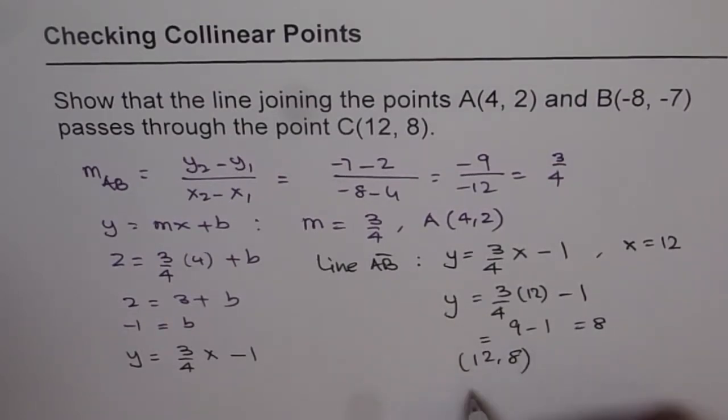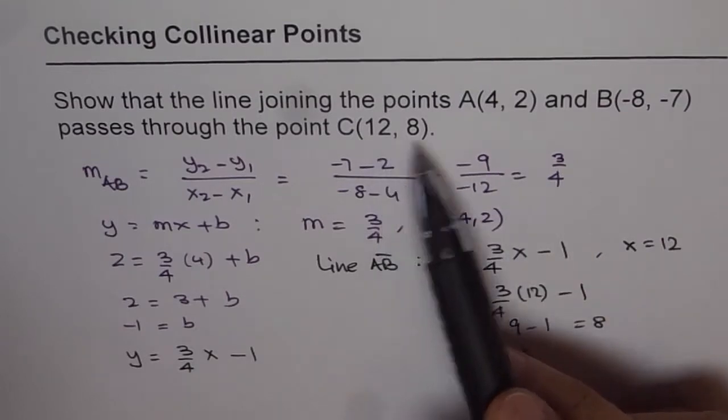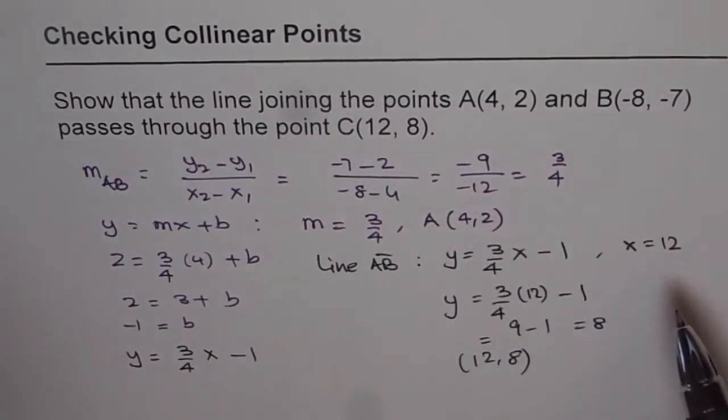So if the point lies on the line, then this point is collinear with A and B. So that is how we can show that a point lies on a line passing through two different points. And whenever you have those points in the same line, we say that the points are collinear.